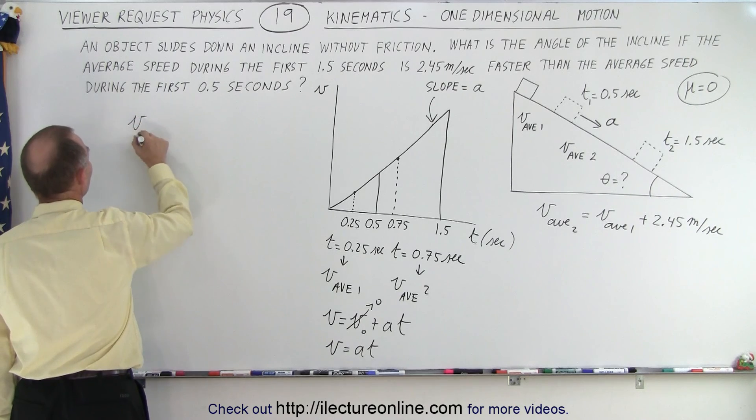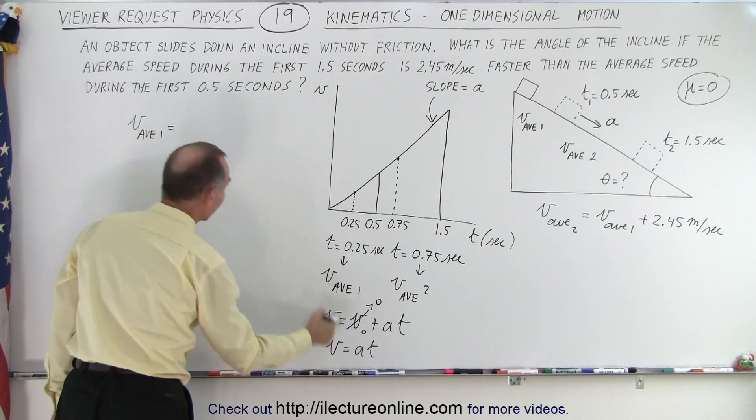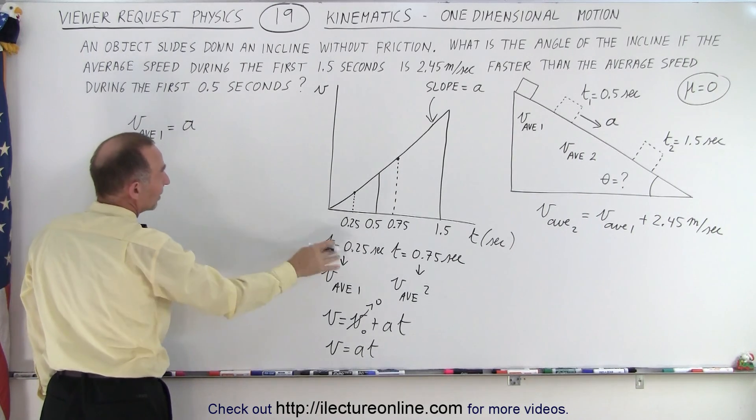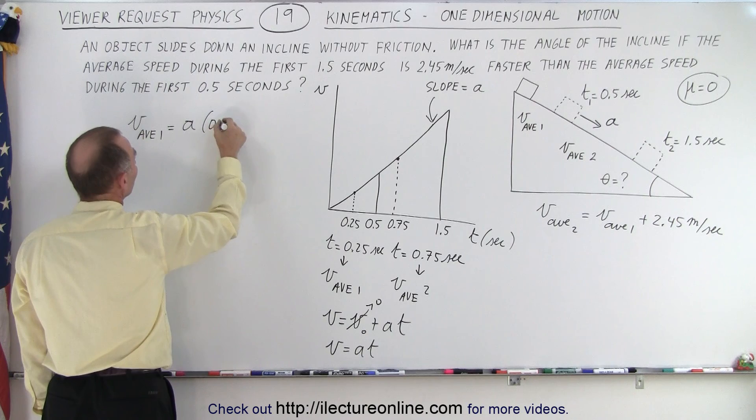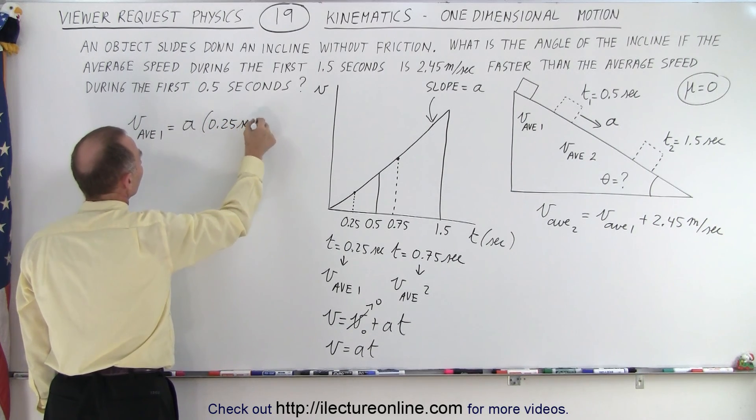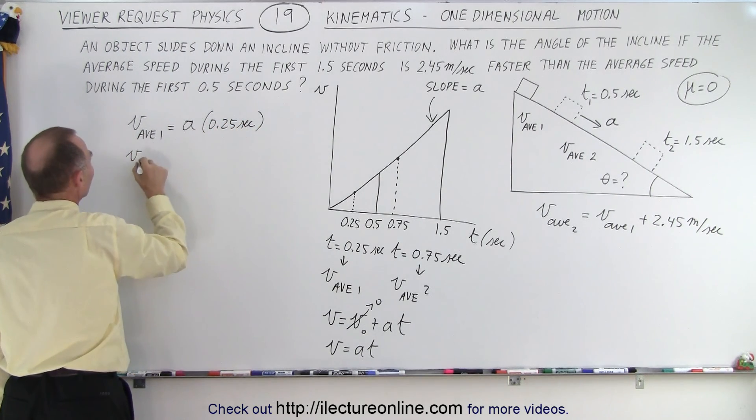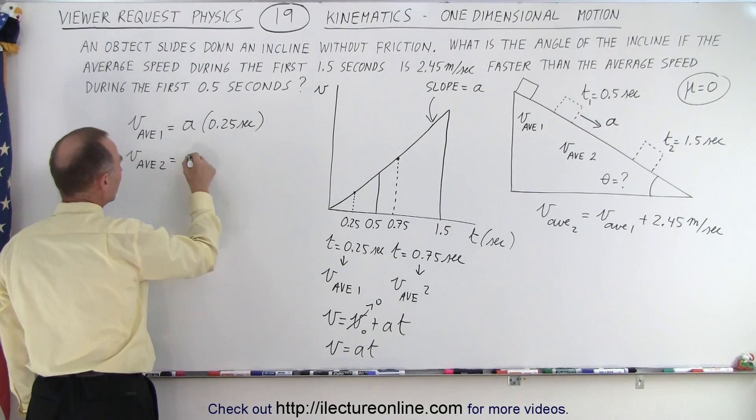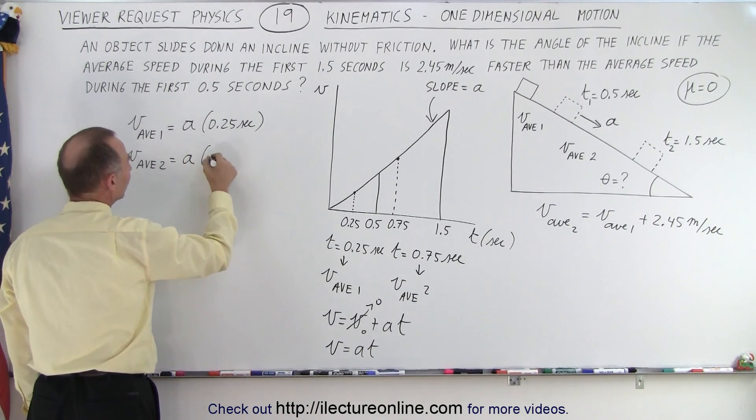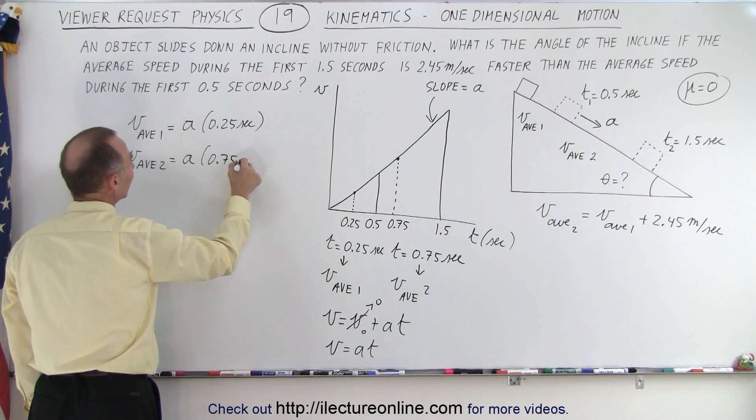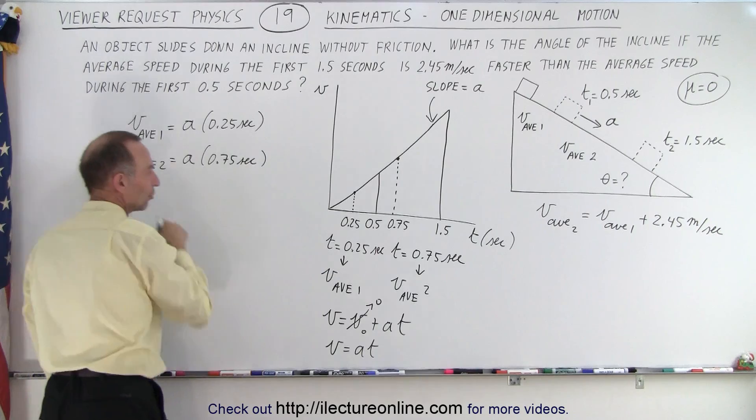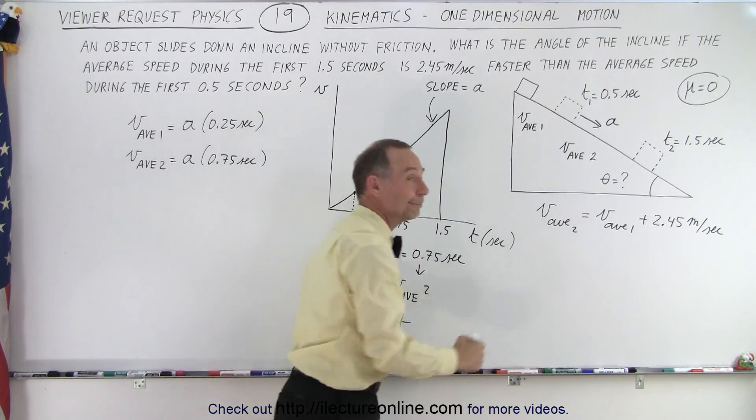So we could say that V average 1 is equal to the acceleration a, whatever the acceleration is, times the time and the time is 0.25 seconds. And we could say that V average 2 is equal to, again, the acceleration a, which we don't know what it is, times 0.75 seconds. And we know that V average 2 could be related to V average 1 through this equation right here.